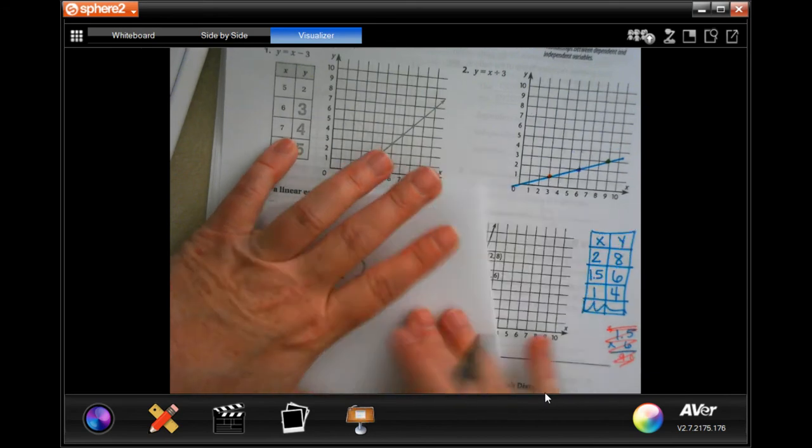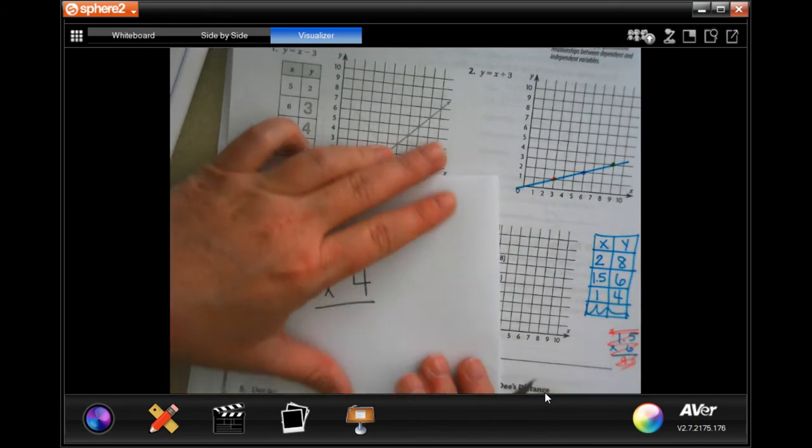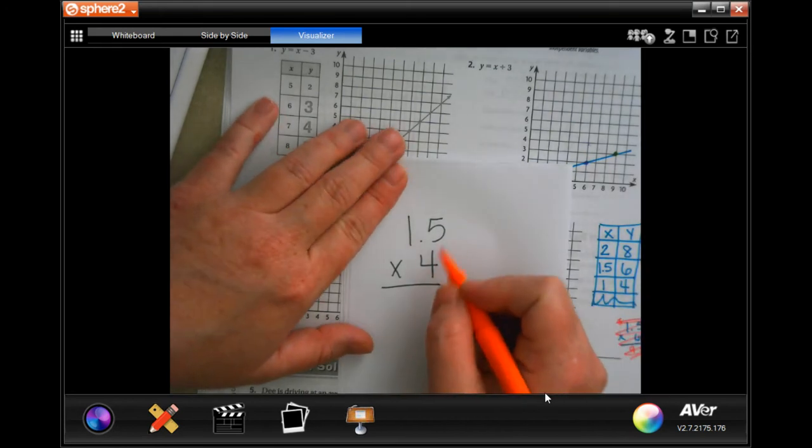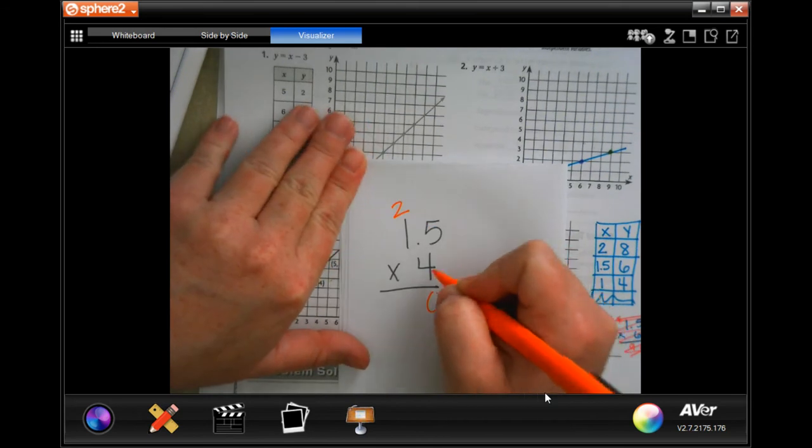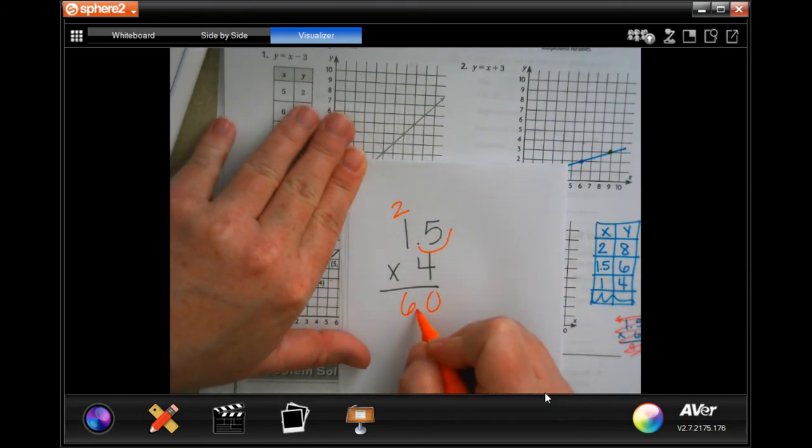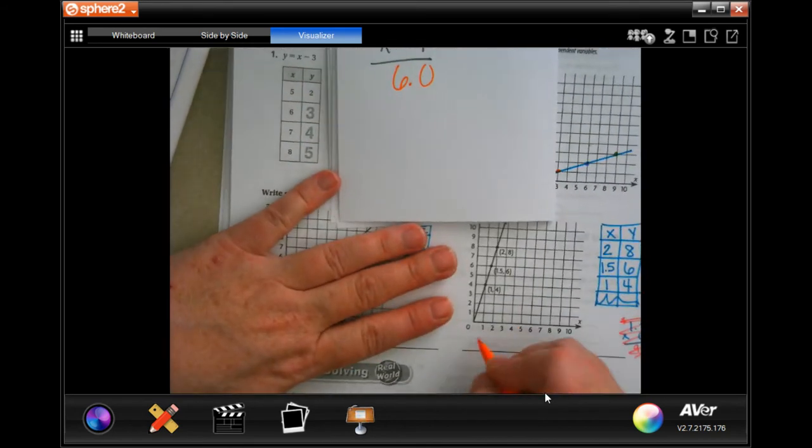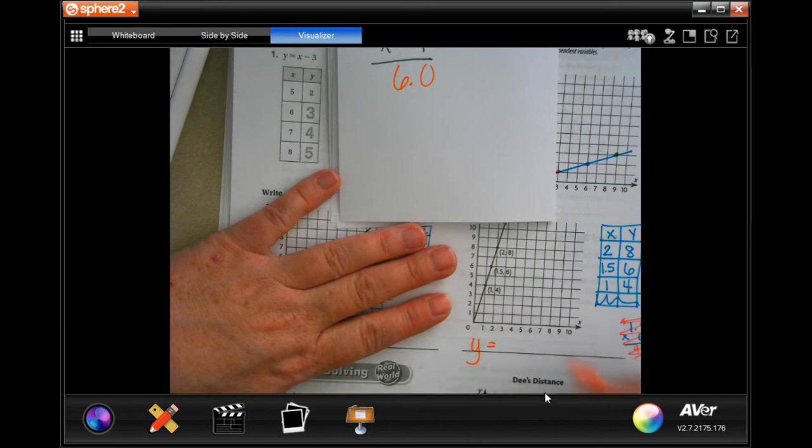So now I'm going to go 1.5 times four because that's what the relationship is between the rest of these, and I'm going to see if I get six. Four times five is 20, carry the two. Four times one is four, plus two is six. And I have to go in one for the decimal right there, so I do get six.